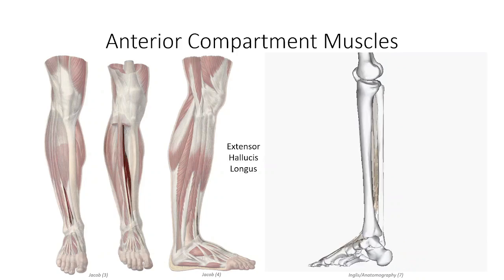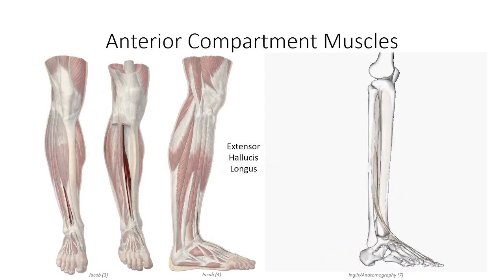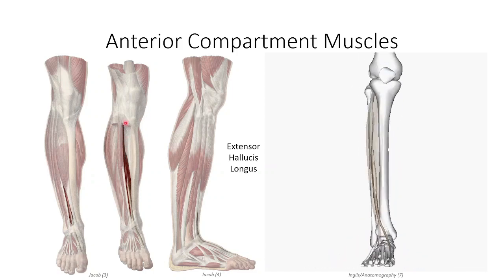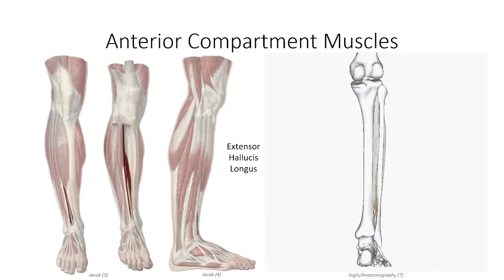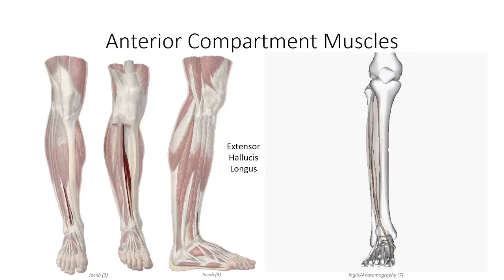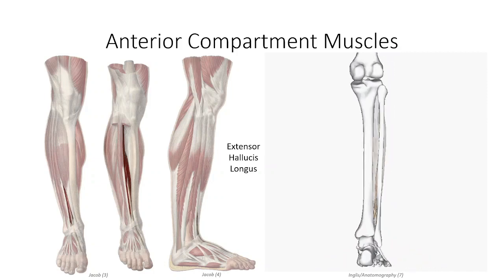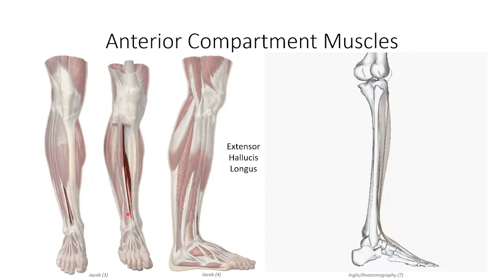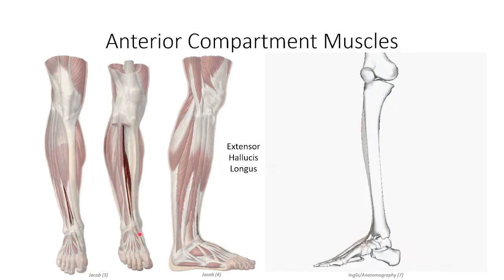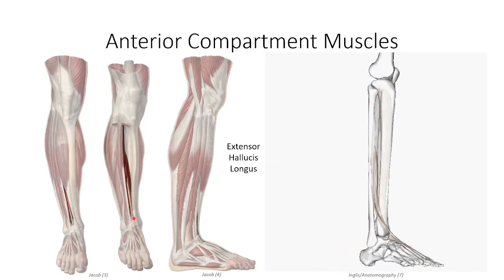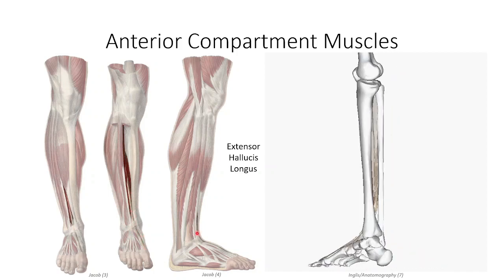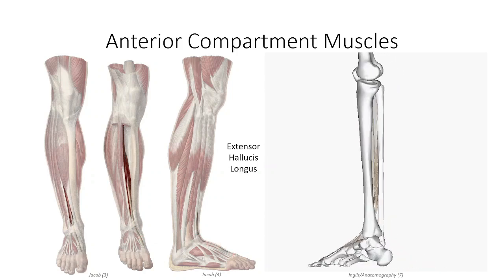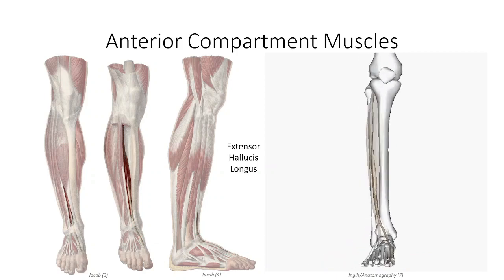The third principal muscle of the anterior compartment is the extensor hallucis longus muscle. The belly for this muscle is found intermediate and deep to that of tibialis anterior and extensor digitorum, originating off the mid-region of the anterior surface of the interosseous membrane and anteromedial surface of the fibula. The tendon for extensor hallucis longus emerges from between the divergent tendons of tibialis anterior and extensor digitorum longus, projecting to the distal phalanx of the great toe on its dorsal surface. The Latin term for great toe is hallux, which makes this function of the muscle pretty self-explanatory.